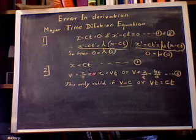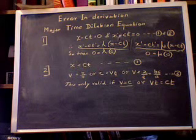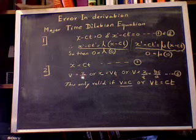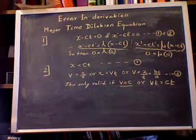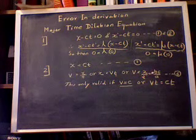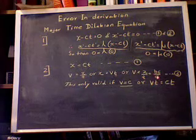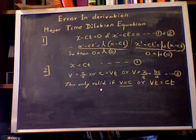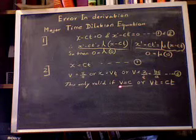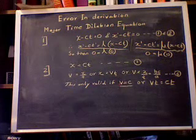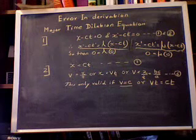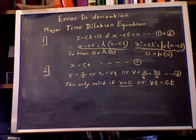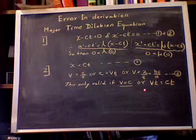Going on from there, we know x equals ct from the very first equation in his book. He then goes on to say that v equals x upon t, or x equals vt, or v equals bc over a in the sixth equation in his derivation. This is only valid if v, which is the velocity between the two frames, is equal to c, which is the speed of light. So just in the first page of his derivations there are quite a few — almost three — major errors.